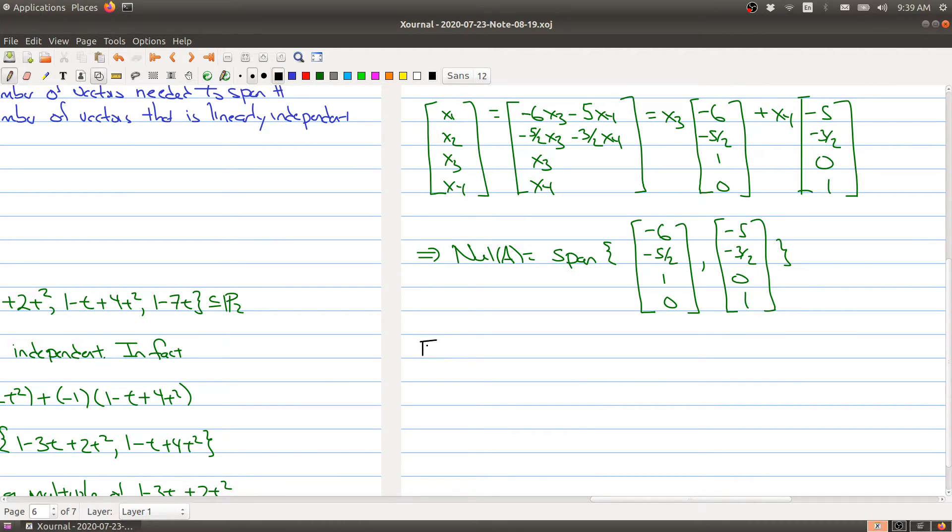But the nice thing here is when you're looking for the null space, you're actually getting the basis for free. So here is the following fact: this procedure actually produces a basis. That is, the vectors are linearly independent.